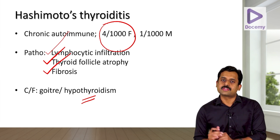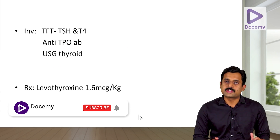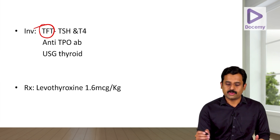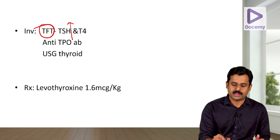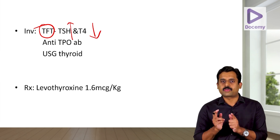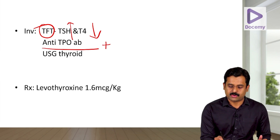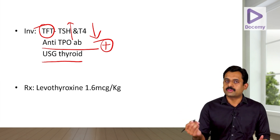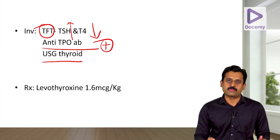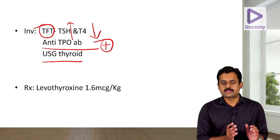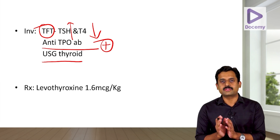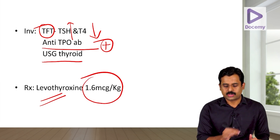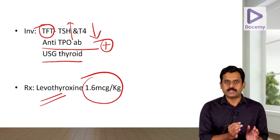Hashimoto's has a tendency to progress to B-cell lymphomas. On investigation, TSH is elevated and T4 is low. Anti-thyroid peroxidase antibodies are positive, and ultrasound of the thyroid can reveal structural abnormalities like multinodular goiter or a solitary adenoma. Treatment is thyroxine supplementation with levothyroxine; the usual dose is 1.6 micrograms per kilogram per day as a single morning dose.